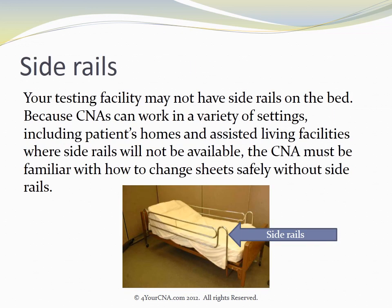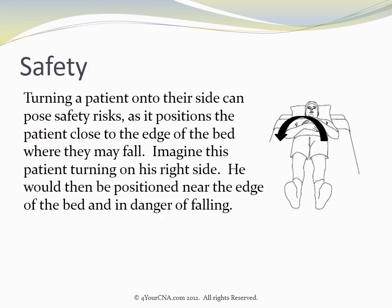Your testing facility may not have side rails on the bed. Because CNAs can work in a variety of settings, including patients' homes and assisted living facilities where side rails will not be available, the CNA must be familiar with how to change sheets safely without side rails. Turning a patient onto their side can pose safety risks, as it positions the patient close to the edge of the bed where they may fall.